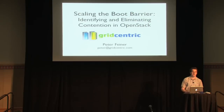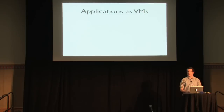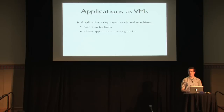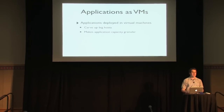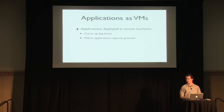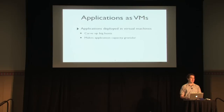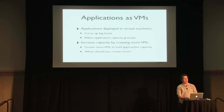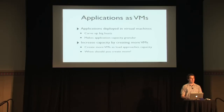This talk is about one component of that performance: VM creation in OpenStack. Deploying applications as virtual machines has clear advantages. First, it lets you carve up a big host and make your application capacity granular. If you have a giant host you might divide it into a hundred units of work — virtual machines serving capacity for totally unrelated applications. With this model you simply increase capacity by creating more virtual machines.